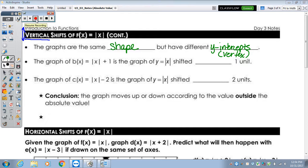In the next bullet, it says the graph of b of x equals x plus 1. That was the graph that was shifted up 1 because it had the plus 1 outside of the symbols. And then c of x on the previous page was a shift down 2 units, because the minus 2 is outside of the symbol. When you have that plus or minus outside of the absolute value symbol, that's going to be a shift vertically. In conclusion, the graph moves up or down according to the value outside of the absolute value symbol.